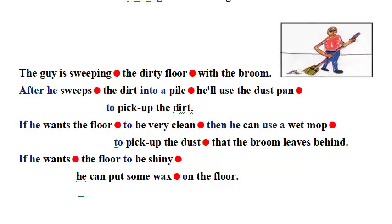Okay, you're reading out loud. The guy is sweeping the dirty floor with the broom. After he sweeps the dirt into a pile, he'll use the dustpan to pick up the dirt. If he wants the floor to be very clean, he can use a wet mop to pick up the dust that the broom leaves behind. If he wants the floor to be shiny, he can put some wax on the floor.